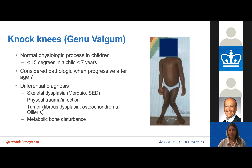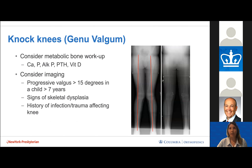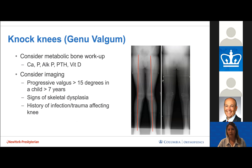Genu valgum is also a normal physiologic process in children — we expect less than 15 degrees of valgus in children under seven. It is considered pathologic when valgus knees progress after age seven. The differential diagnosis includes skeletal dysplasias, physeal trauma or infection, tumors such as fibrous dysplasia or osteochondromas, metabolic bone issues, or idiopathic genu valgum worsening beyond age seven. A metabolic bone workup and imaging can be considered when valgus is progressive and greater than 15 degrees in a child older than seven.